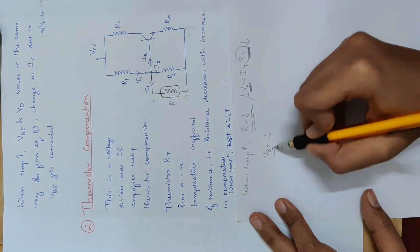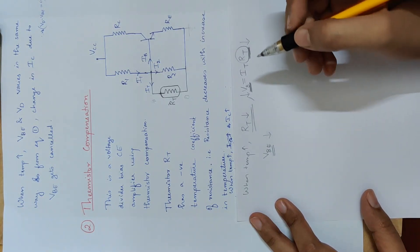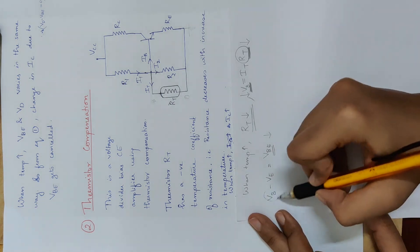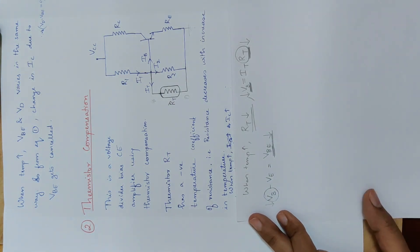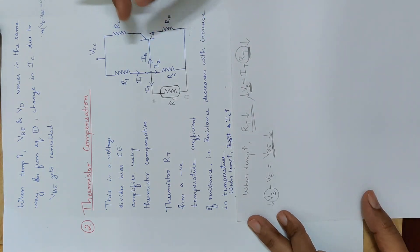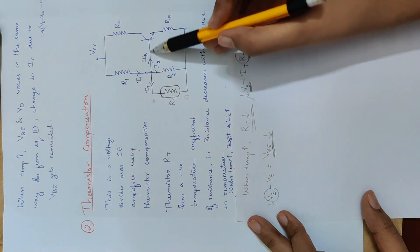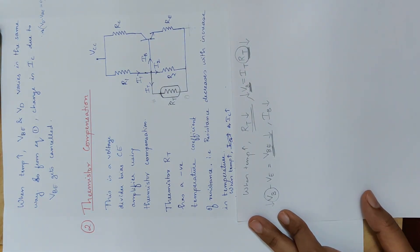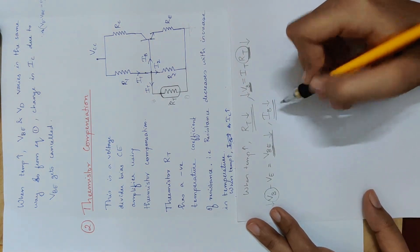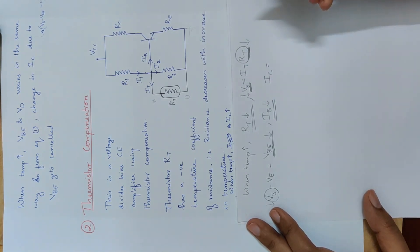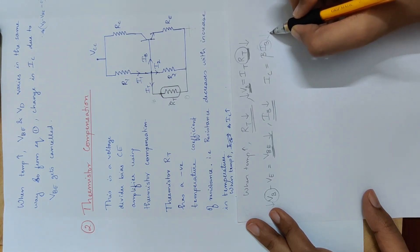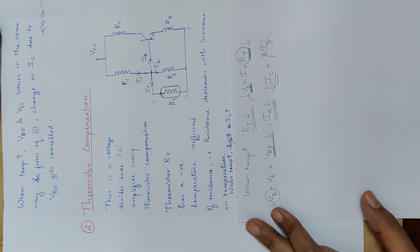The base voltage Vb relates to the base-emitter voltage Vbe, since Vbe equals Vb minus Ve. Vbe is the base-emitter forward bias voltage. As Vbe decreases, the base current Ib decreases. Since IC equals beta times Ib, the collector current IC also decreases.